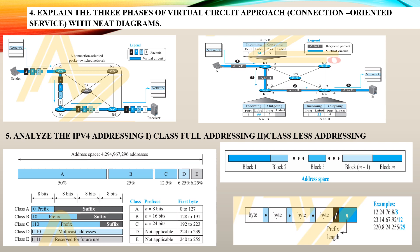Moving on to the next question: analyze IPv4 addressing — classful and classless addressing. In classful addressing, the prefix is not always fixed; it differs per class. There are five classes — A, B, C, D, and E. Class A has prefix 0; Class B has prefix 1,0; Class C has 1,1,0; Class D has 1,1,1,0; and Class E has four 1s. Class E is reserved for future use and is used for multicast addressing when connecting multiple routers, LANs, and WANs. Classes A, B, and C are commonly used. The prefix changes for each class.